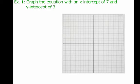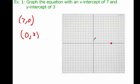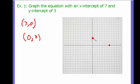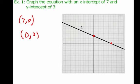So let's take a look at an example. It says graph the equation with an x-intercept of 7 and a y-intercept of 3. Well, if I know my x-intercept is 7, that's the point 7, 0 — because y is always 0 at the x-intercept. And if my y-intercept is 3, that's the point 0, 3. I've got my two points plotted, so now all I have to do is draw a line between them. No problem at all — super easy. When given two points, simply plot them and draw a line between them.